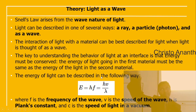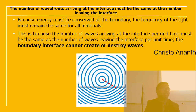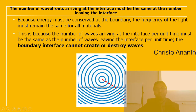Frequency can be expressed as f = v / λ. Because energy must be conserved at the boundary, the frequency of light must remain the same in all materials — the number of waves arriving at the interface per unit time must equal the number leaving. The boundary cannot create or destroy waves, so the number of wave fronts arriving must equal the number leaving.